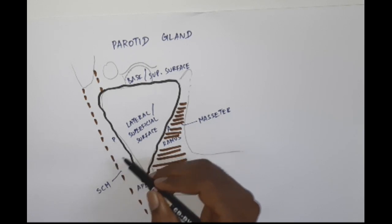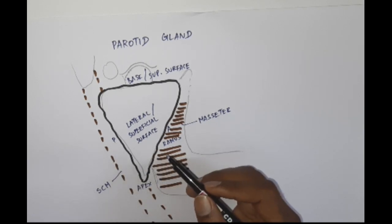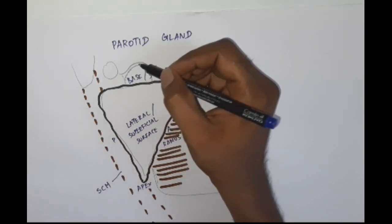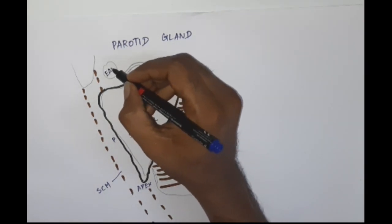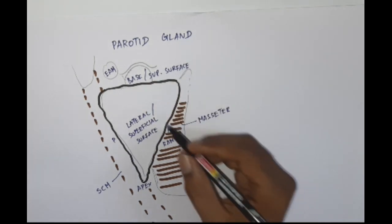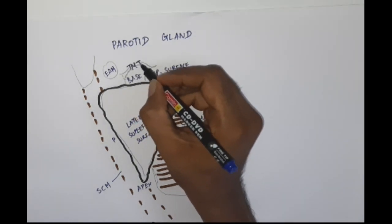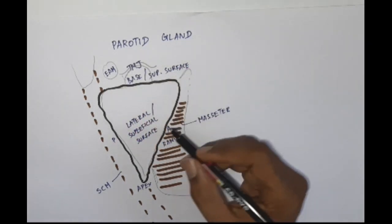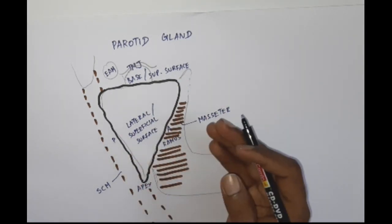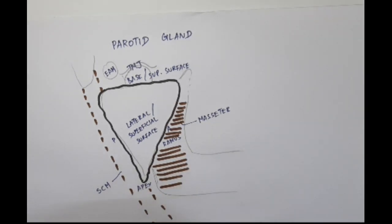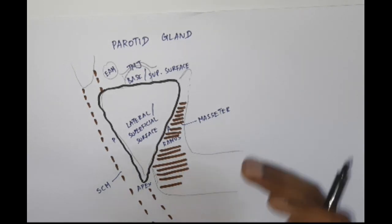Posteriorly, the posterior border overlaps the sternocleidomastoid. Also one more muscle called the posterior belly of digastric. Above the superior surface, you see the external acoustic meatus, the mandibular fossa, and the condyloid process. The temporomandibular joint is actually related above there. Anteriorly, the anterior border overlaps the masseter muscle, not the ramus. The masseter muscle is inserted over the lateral surface of the ramus. So the gland overlaps a muscle in front and a muscle behind.